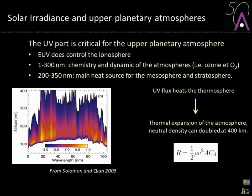The far UV is the main energy source for the mesosphere and stratosphere. In a space weather context, UV flux from 200 to 350 nanometers causes thermal expansion of the atmosphere. The neutral density can double at 400 km — typical low Earth orbit altitude — producing a drag force that slows satellites. Knowing this in advance allows operators to increase velocity slightly to compensate and maintain orbit.